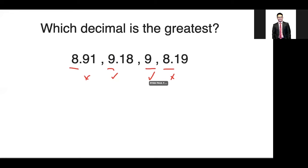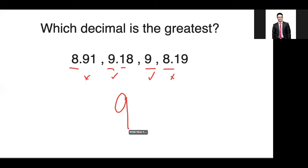We will now focus on these two numbers: 9.18 and 9. Because both numbers have 9 in the ones unit, we will move on to the next place value digit, which is 1. But for 9, there's none, so automatically the next digit for that is 0. We compare the digits, and 1 is greater than 0, therefore the greatest value is 9.18.